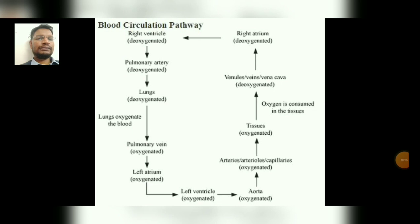The pulmonary vein carries the oxygenated blood from the lungs to the left atrium. From the left atrium, it moves to the left ventricle, from where it leaves and enters into the aorta.